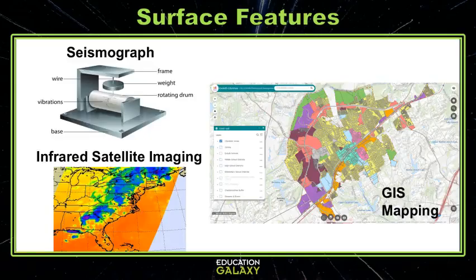We now have technology that can help us detect and predict some sudden changes in Earth's surface features. Seismographs measure the vibration in the Earth's surface and can predict both volcanoes and earthquakes. Infrared satellites can detect and send images of current weather patterns. And the Geographic Information System, or GIS, is a computer program that creates a map prediction of an entire floodplain, showing the areas likely to get flooded, when the floodwaters will arrive, and when the flood will crest.